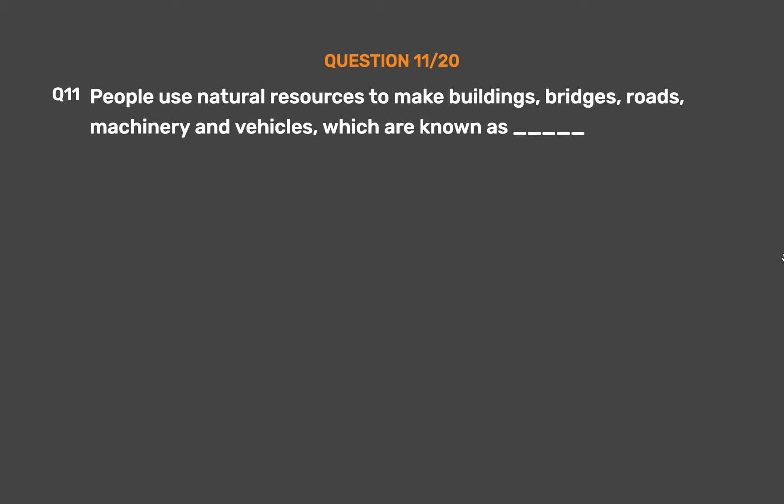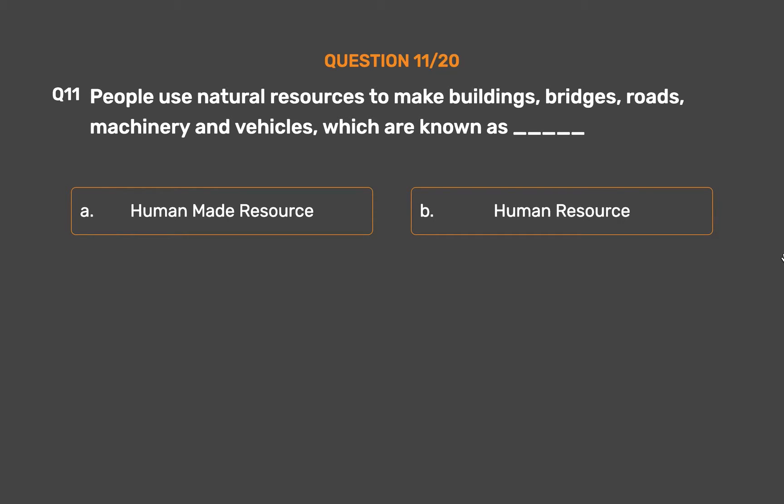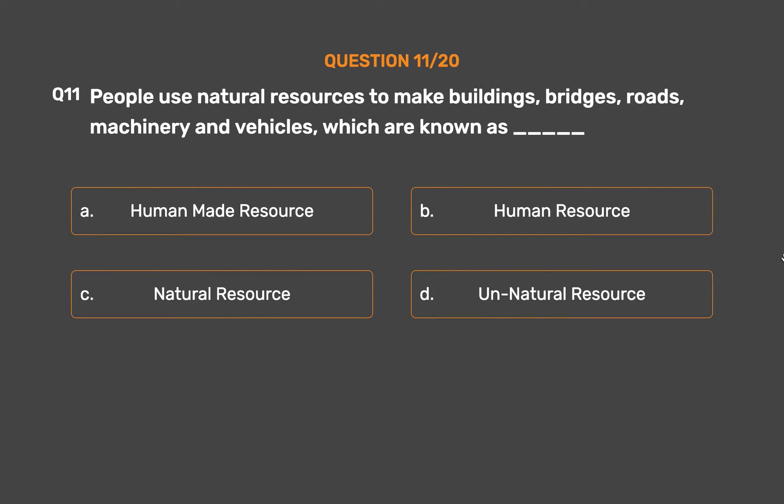Question number 11. People use natural resources to make buildings, bridges, roads, machinery, and vehicles, which are known as ___. Option A: Human-made resource. Option B: Human resource. Option C: Natural resource. Option D: Unnatural resource.